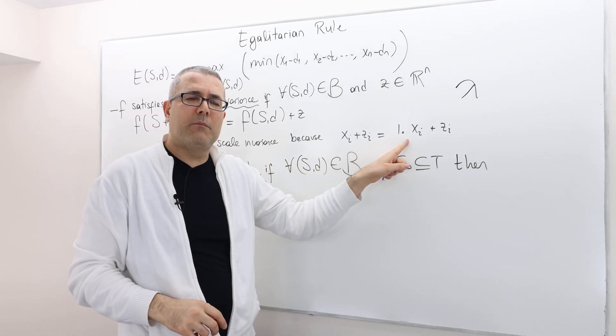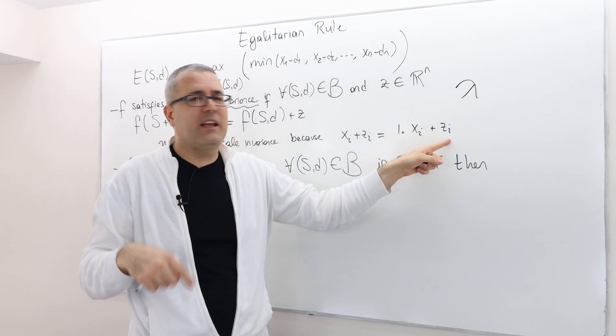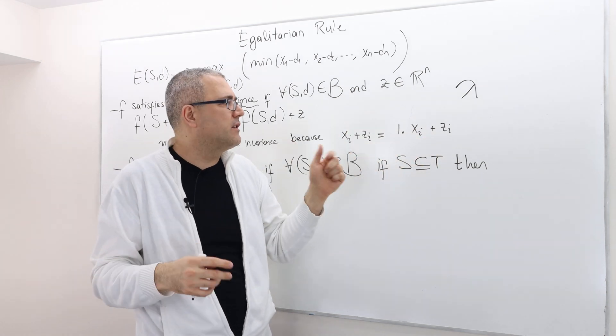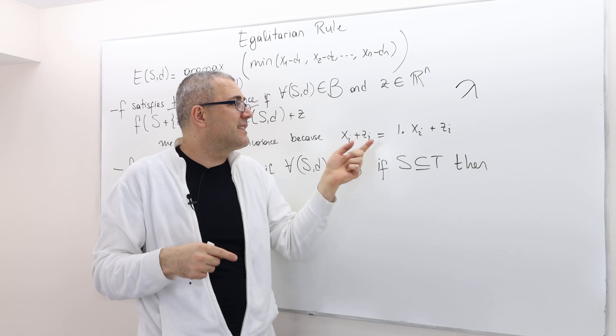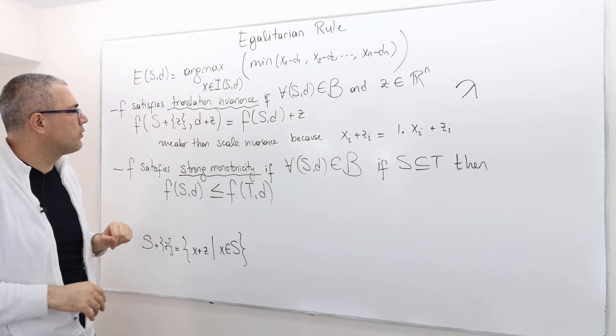The positive number I'm multiplying xi by is one, and then I'm adding a number zi. So that's a specific transformation, not any transformation, just one specific transformation.